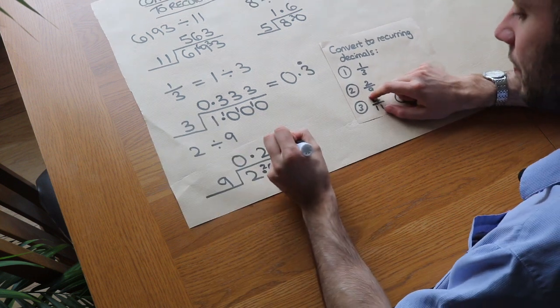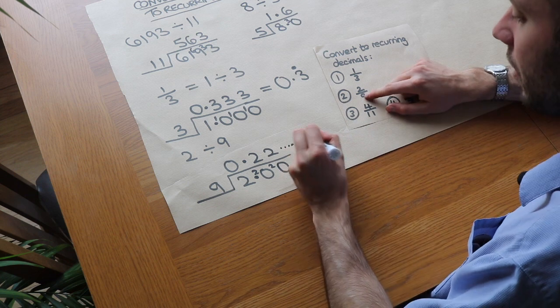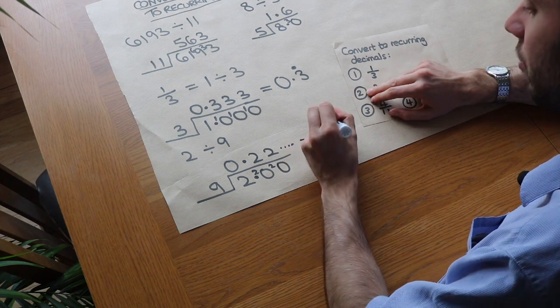And you can see, basically, the 2 is going to repeat. And that's going to be 0.2 recurring.